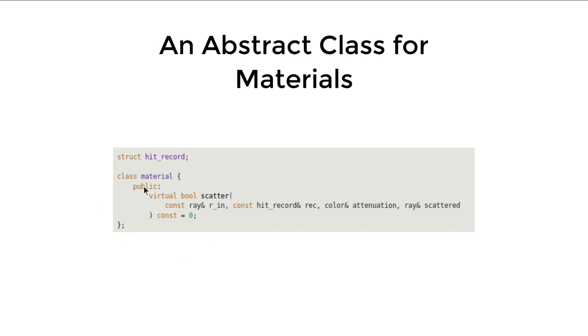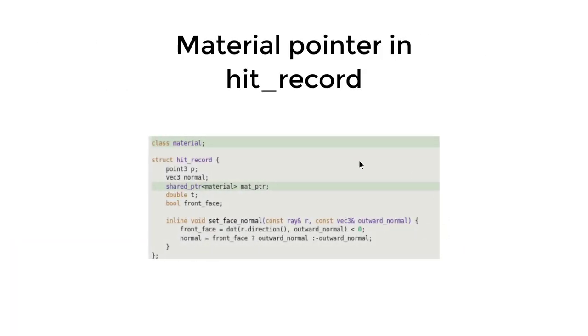We have a material class that has one virtual function scatter that takes a ray, and then it returns whether we scatter the ray or not, because sometimes we just absorb the ray, and then also give us back the attenuation of the ray, and the direction of the output scattered ray. The other thing we want to do is inside our hit record, we need to store a material now, because we need to use this information when we do our scattering.